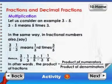in fractional numbers also, say 3 by 5 into 1 by 3 means 1 by 3 times 3 by 5. Hence, 3 by 5 into 1 by 3 is equal to 3 into 1 by 5 into 3 which is equal to 1 by 5.